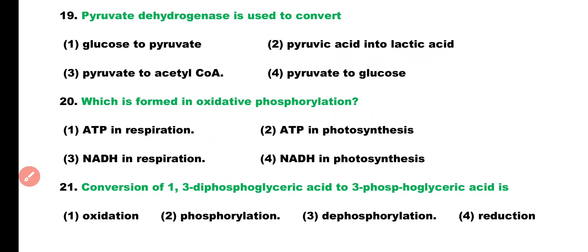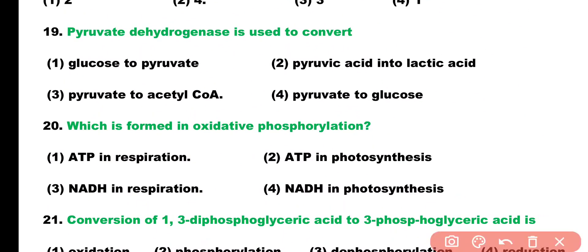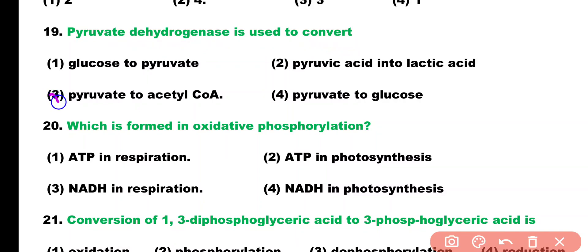Question number 19. Pyruvate dehydrogenase is used to convert: glucose into pyruvate, pyruvate into lactic acid, pyruvate into acetyl coenzyme A, or pyruvate into glucose. Correct answer is option 3. Pyruvate dehydrogenase is the enzyme that converts pyruvate into acetyl coenzyme A.